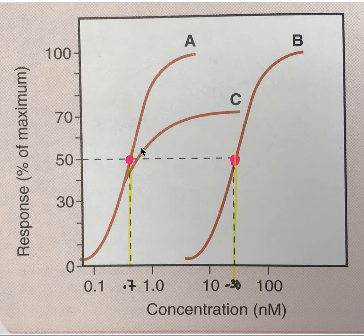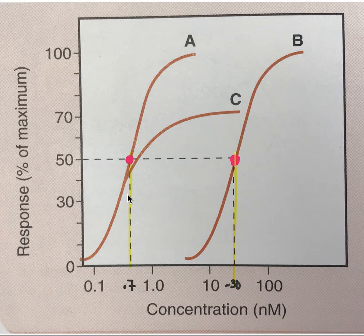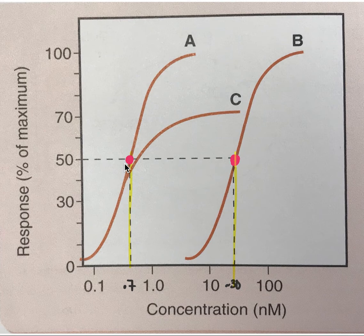Now what about A and C? We already said that A has more efficacy than C. What about potency? A and C both need the same amount of drug in order to get that 50% response. So A and C have the same potency.